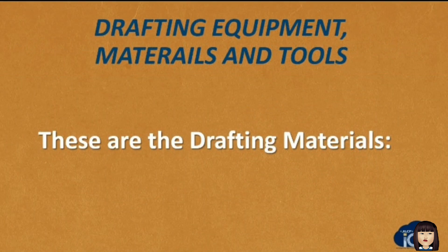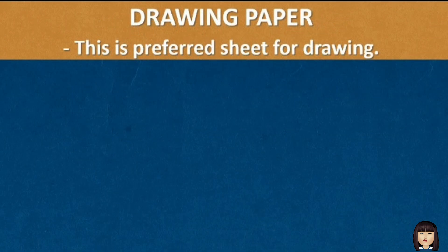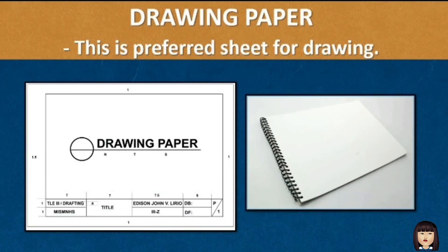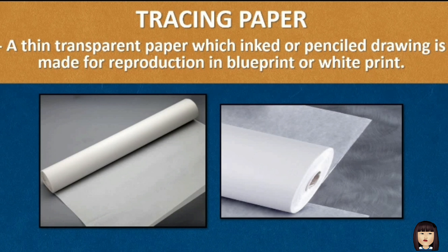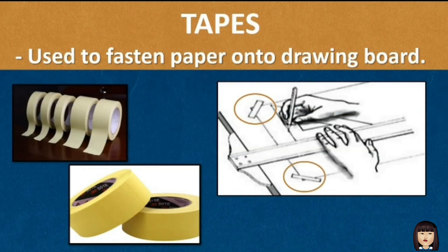These are the drafting materials. The drawing paper is a prepared sheet for drawing. One kind of drawing paper used by a draftsman is the tracing paper — a thin, transparent paper on which ink or pencil drawing is made for reproduction in blueprint and white print. Tapes are used to fasten paper onto the drawing board.